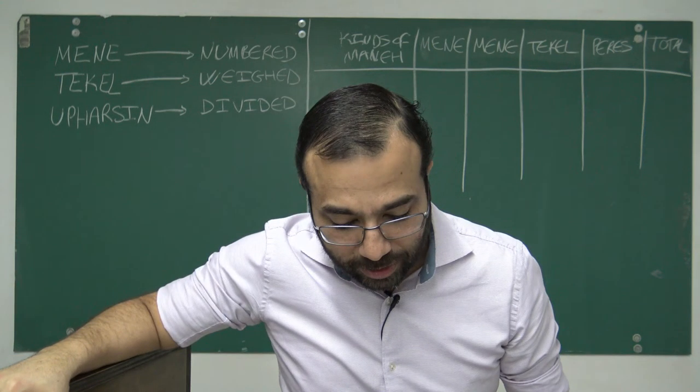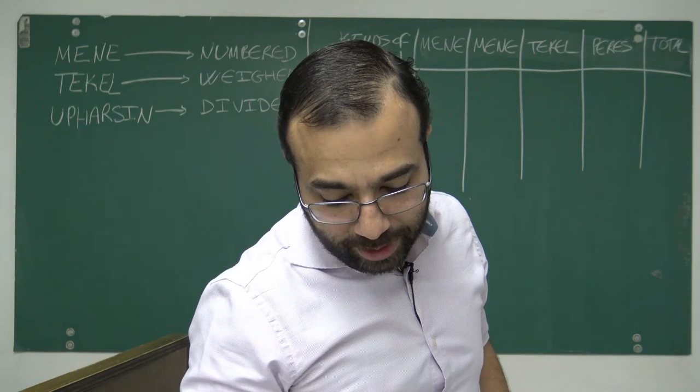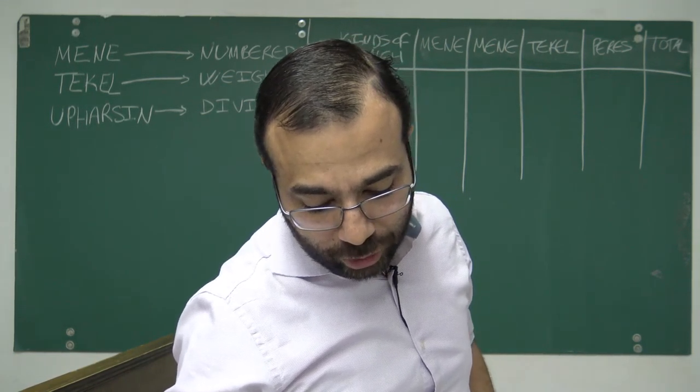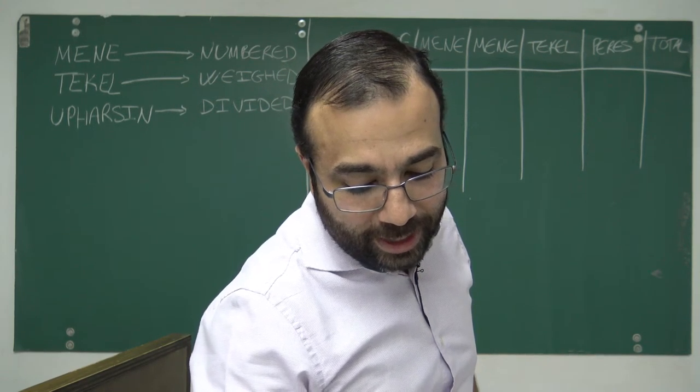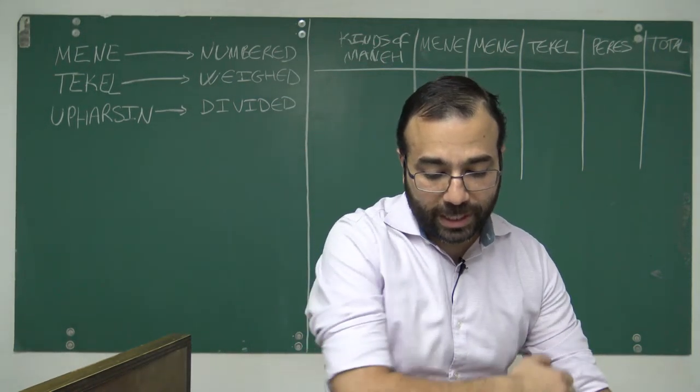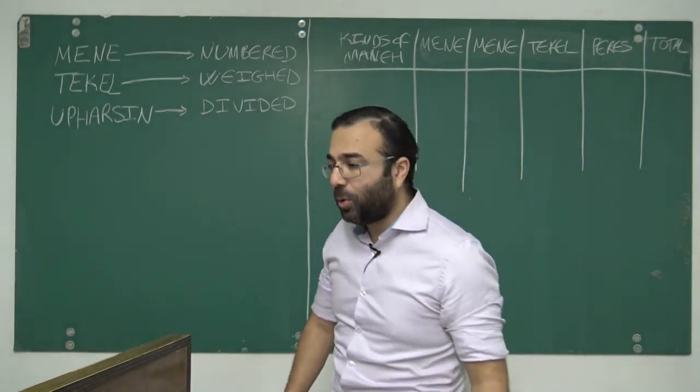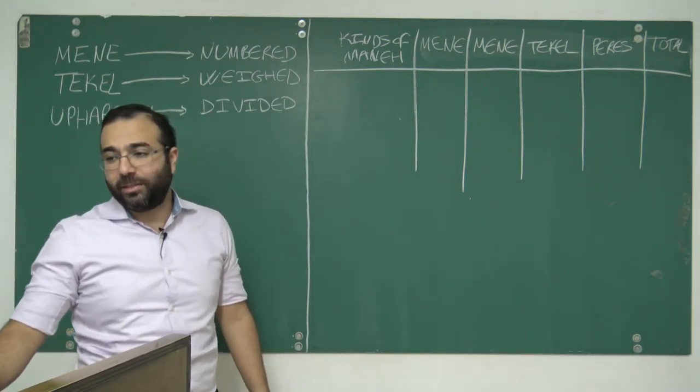Then Belshazzar commanded they clothe Daniel with scarlet and put a chain of gold about his neck and made a proclamation that he should be the third ruler in the kingdom. In that night was Belshazzar the king of the Chaldeans slain, and Darius the Mede took the kingdom, being about threescore and two years old.